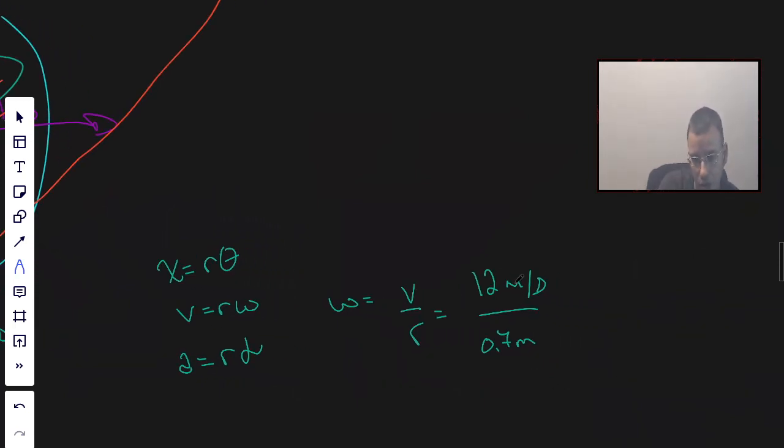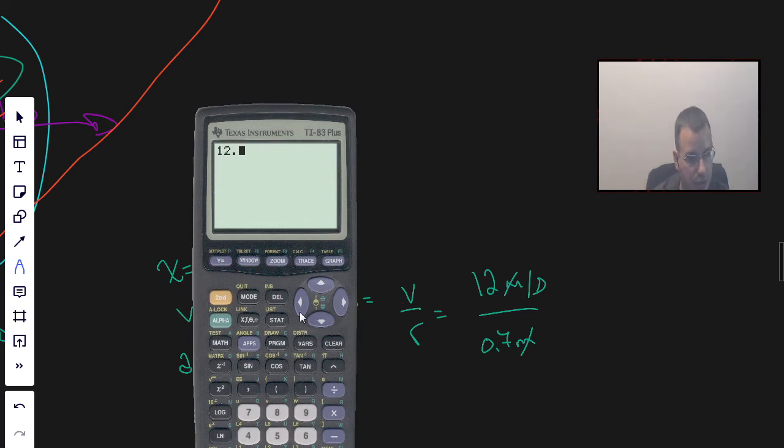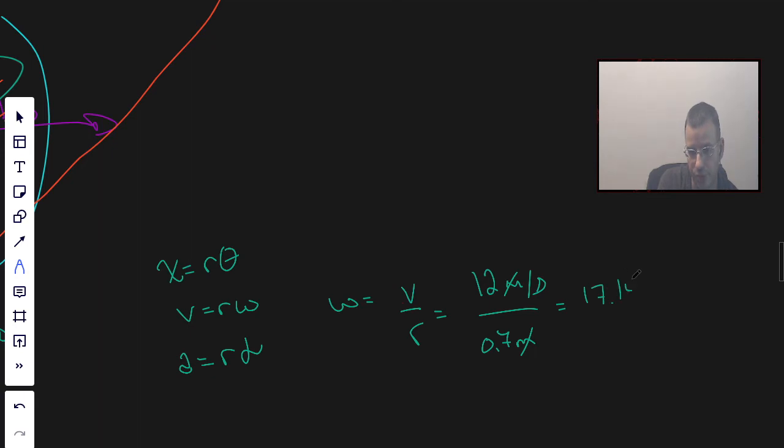This is going to give us 12 divided by 0.7. We get 17.14. And this is going to be in radians per second.